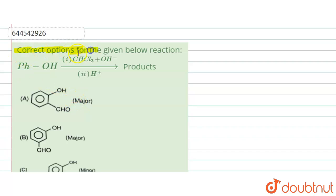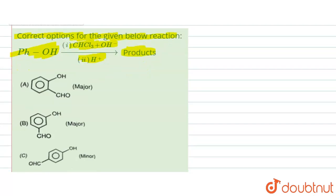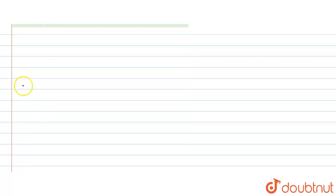The question asks for the correct options for the given reaction. We have phenol, CHCl3, OH minus, H plus, and the product.